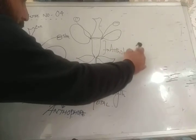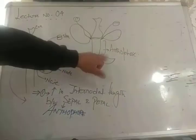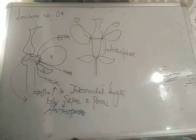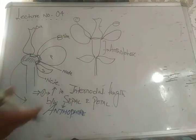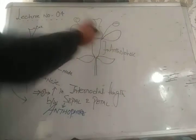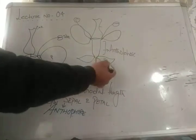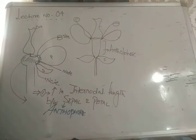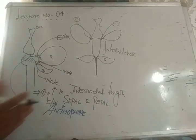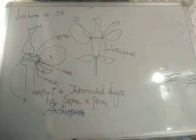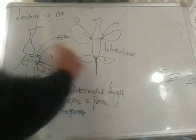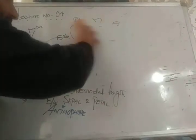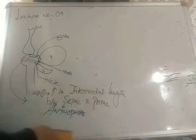Anthophore — I hope you can understand. The sepal and petal increase in the internodal length. When the internodal length increases, the thalamus portion between sepal and petal is elongated. Above the sepal, petal, stamen, and carpel are all found elevated — this condition is called anthophore. I hope you got the idea of what anthophore actually means.